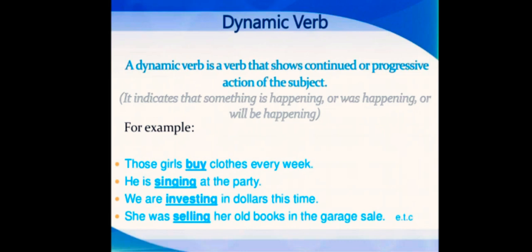The next type is dynamic verb. A dynamic verb is a verb that shows continued or progressive action of the subject. It indicates that something is happening or was happening or will be happening. Dynamic is basically the true form of an action verb - a real action is taking place. Those girls buy clothes every week. He's singing at the party. We are investing in dollars this time. She was selling her old books in the garage sale. It's continued or progressive action, happening right now, it is ongoing.